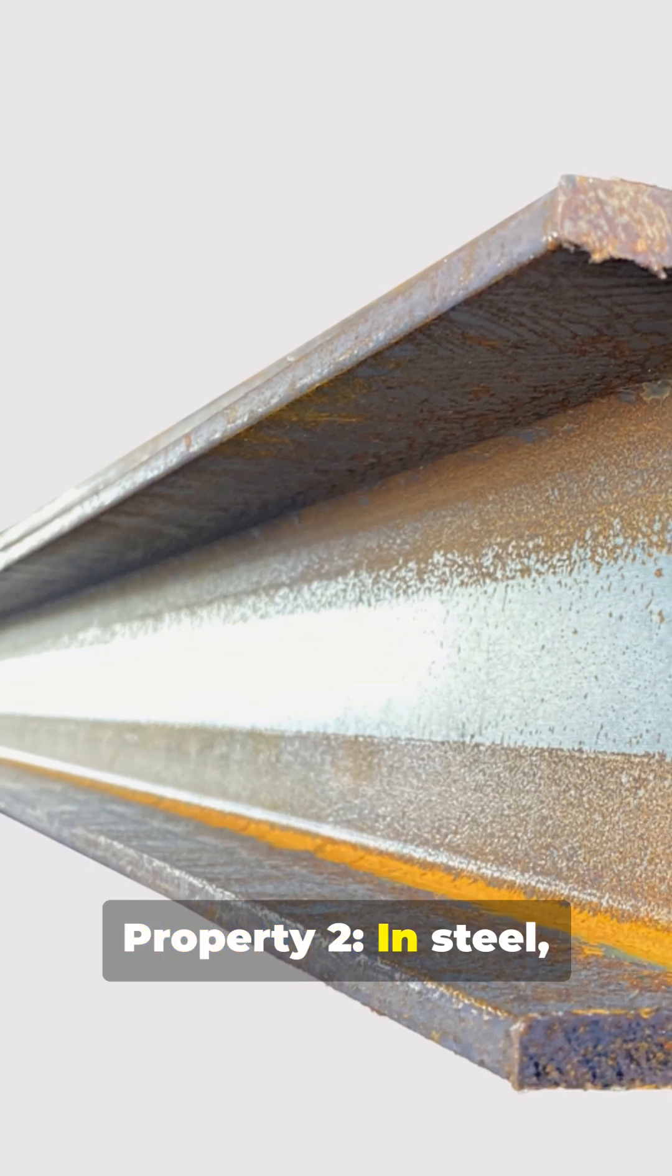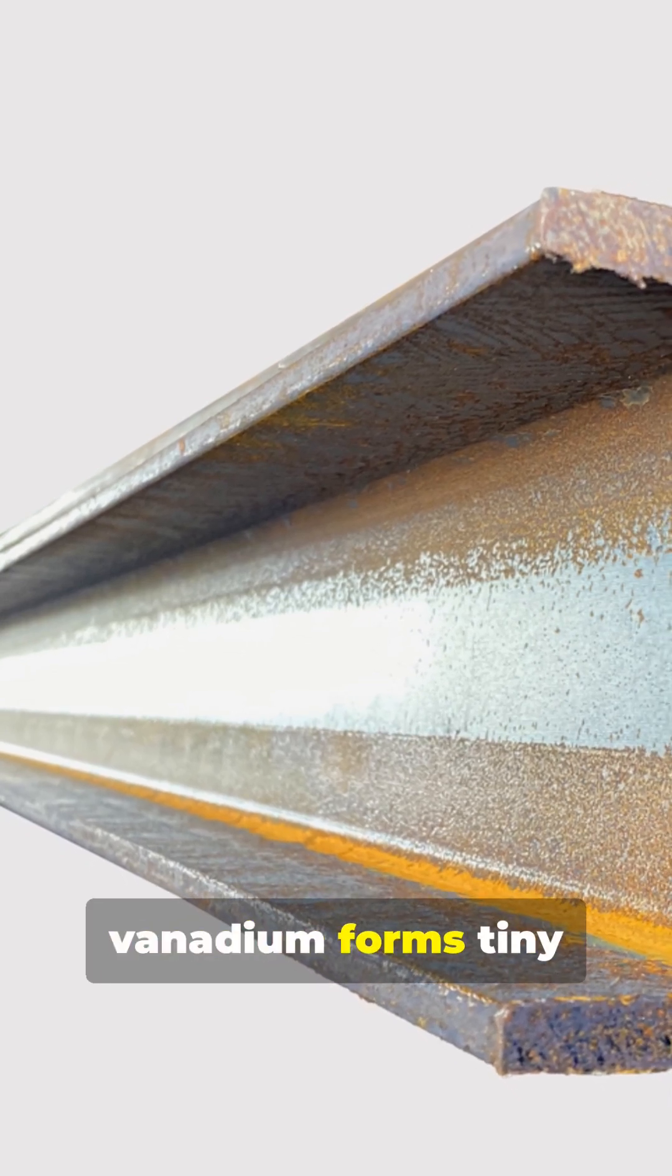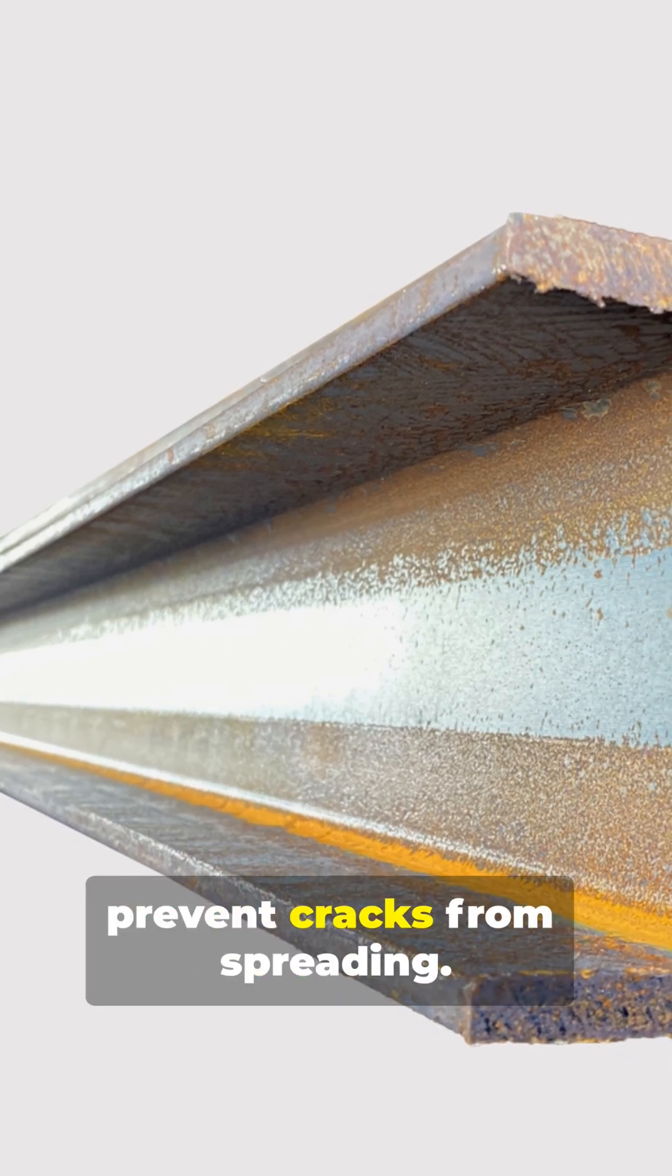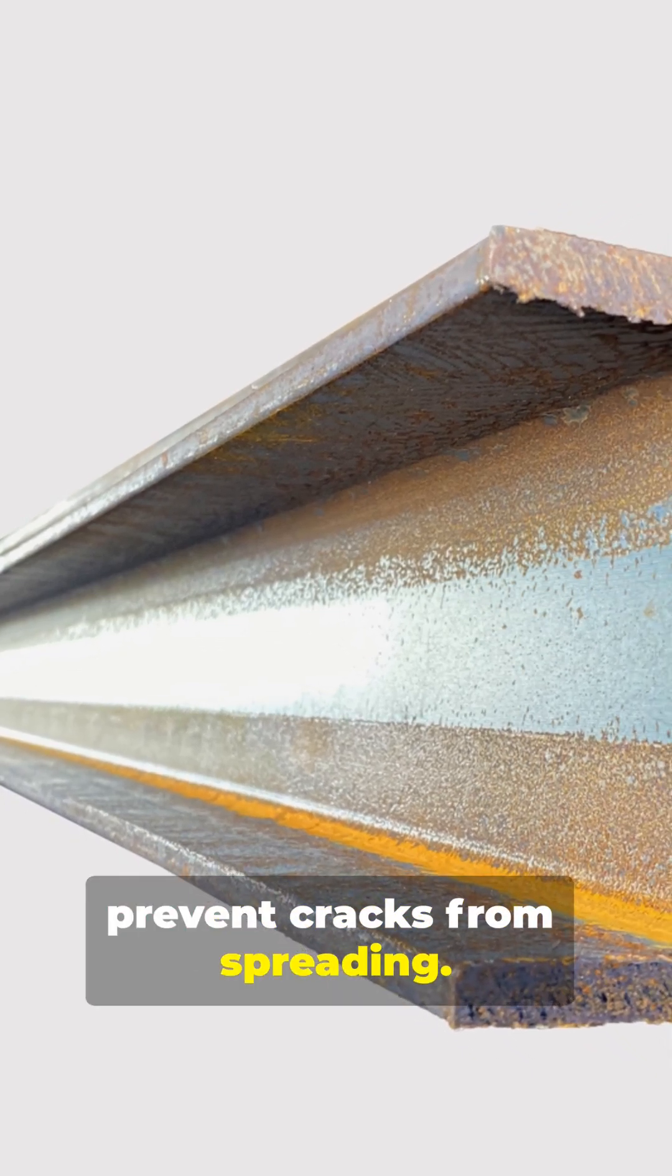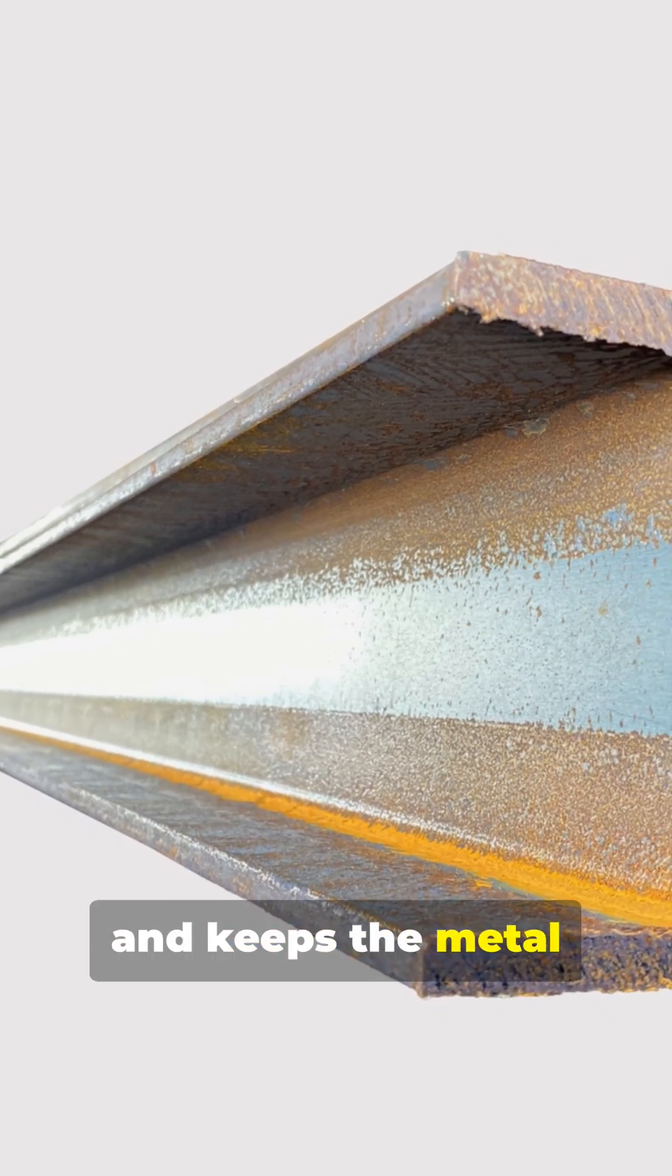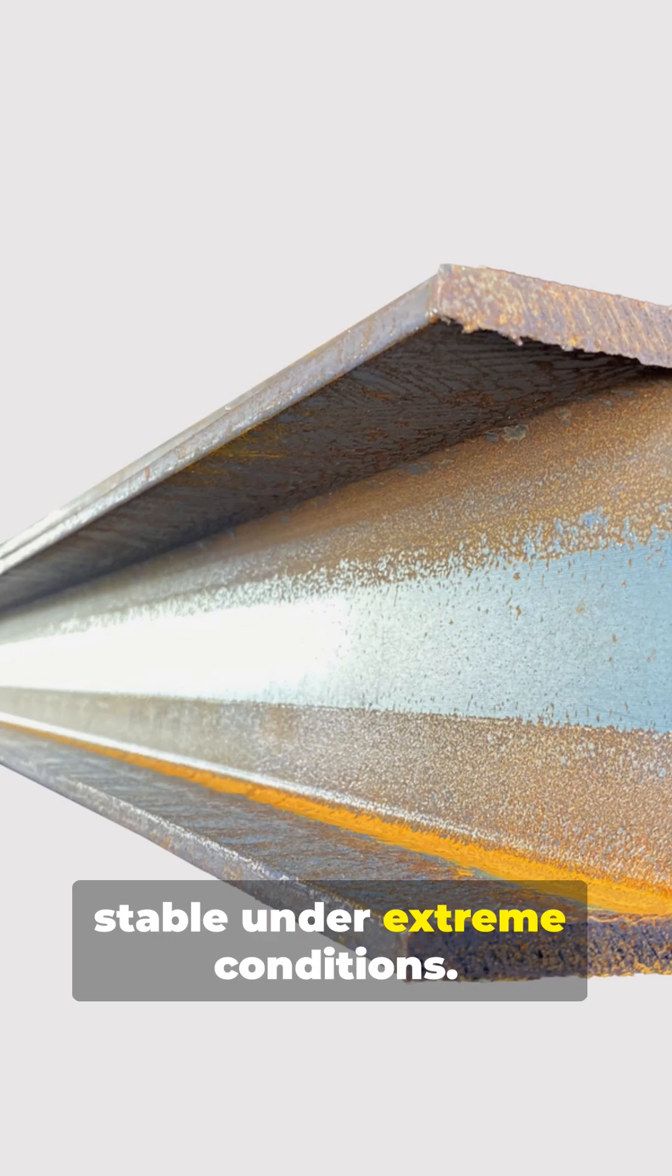Property two. In steel, vanadium forms tiny strengthening particles that prevent cracks from spreading. At the atomic level, it absorbs stress and keeps the metal stable under extreme conditions.